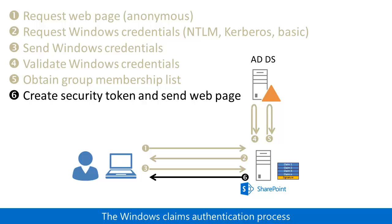The IIS web server on the SharePoint server then sends an authorization code to the client computer. If the user is authorized to access the requested web page through analysis of the claims in the security token and the configured permissions, the SharePoint server then sends the contents of the page. For subsequent requests, the client computer uses the authorization code for authentication.